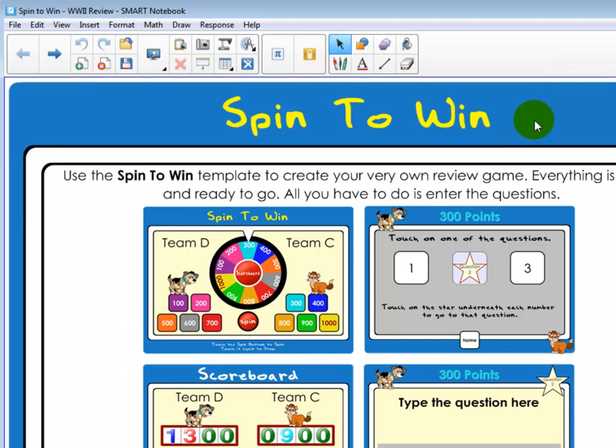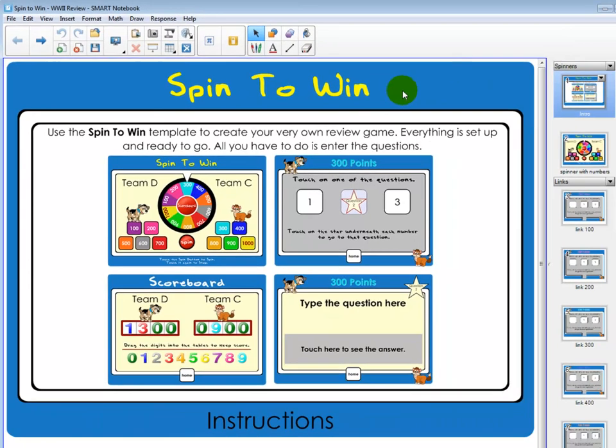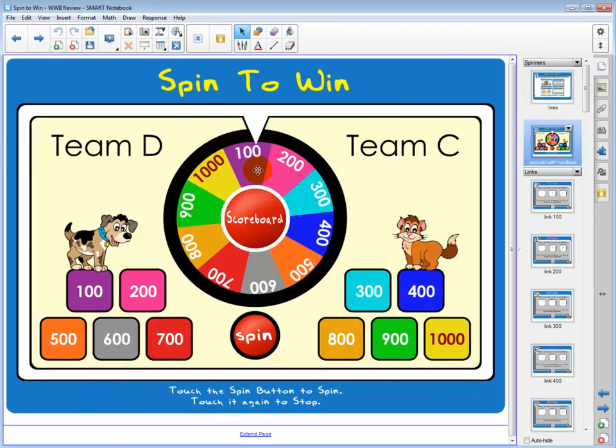Now all I need to do is enter the questions and the answers for the review game. In this game, there are ten different values or point totals ranging from 100 to 1000. For each of the point totals, you can have a total of three questions.